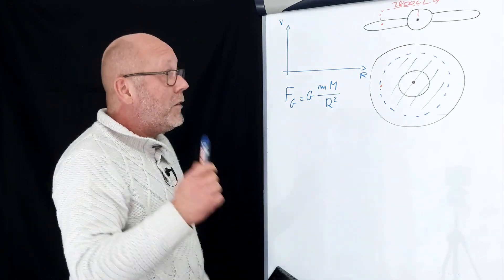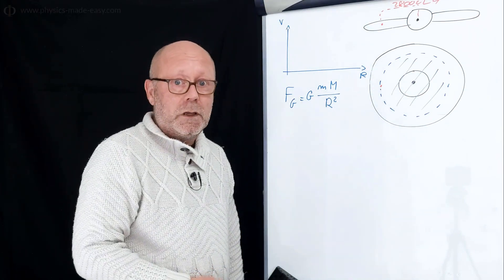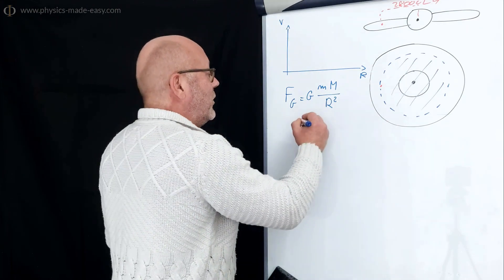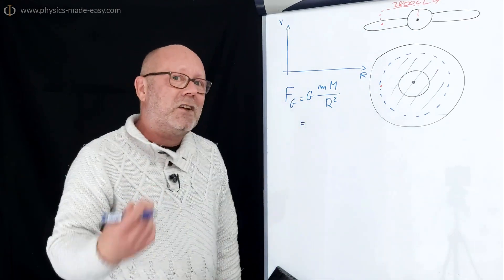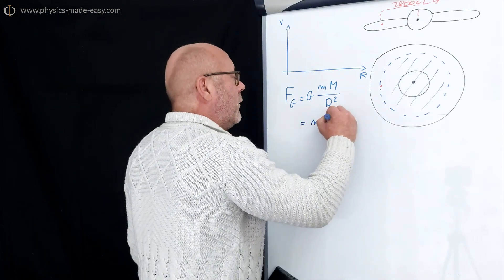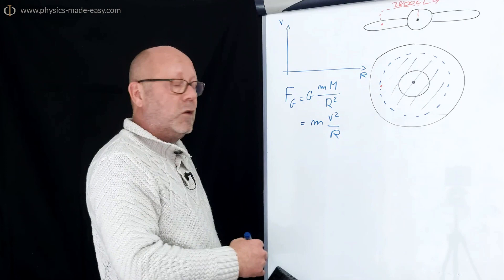OK. We are assuming, actually, that the star is in circular motion. Yeah, it's a reasonable assumption, but it allows us to say that the gravitational force is a centripetal force, therefore it is expressed as mv squared over r. And we can equate these two expressions.